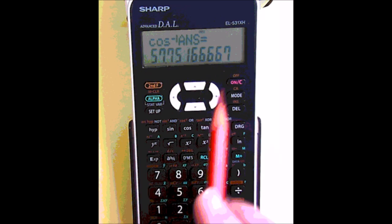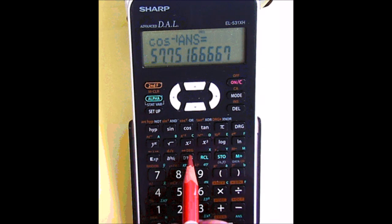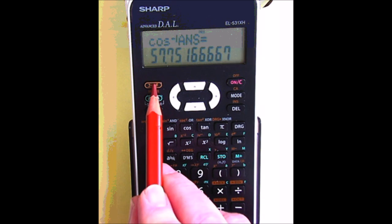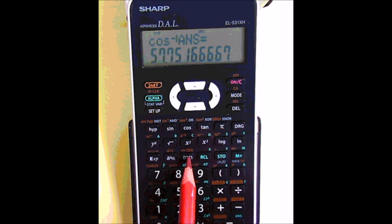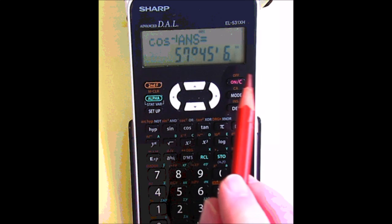To convert that into degrees, minutes, seconds, above the DMS button you've got this degree symbol. If I were to choose that by going second function, I now have 57 degrees, 45 minutes, and 6 seconds.